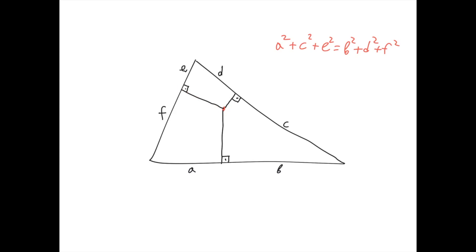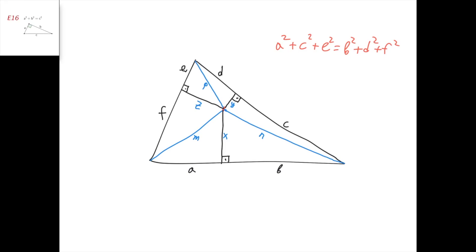So now we're going to prove this theorem in both directions. First, let's start with the easy direction where we have a point from which the three perpendiculars have been dropped, and we just need to prove this. Let's draw and put names on each segment in the picture. The perpendiculars have lengths x, y, and z, and the segments that connect the vertices to the random point have lengths m, n, and p. Now we can use the Pythagorean theorem for these six right-angle triangles.